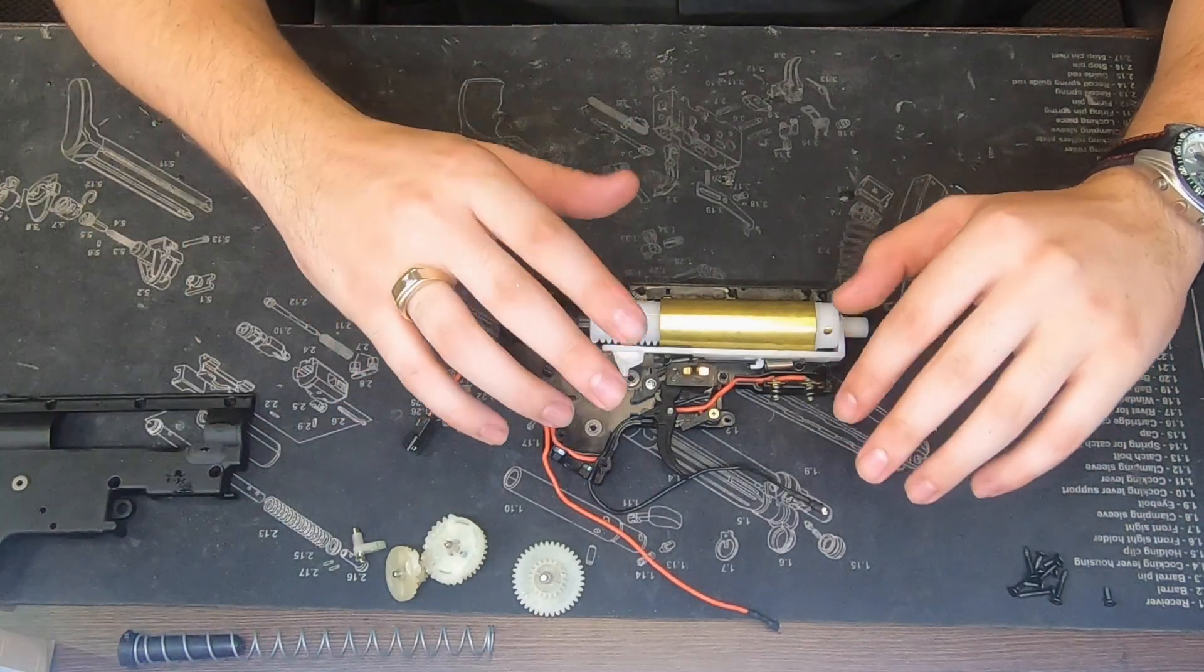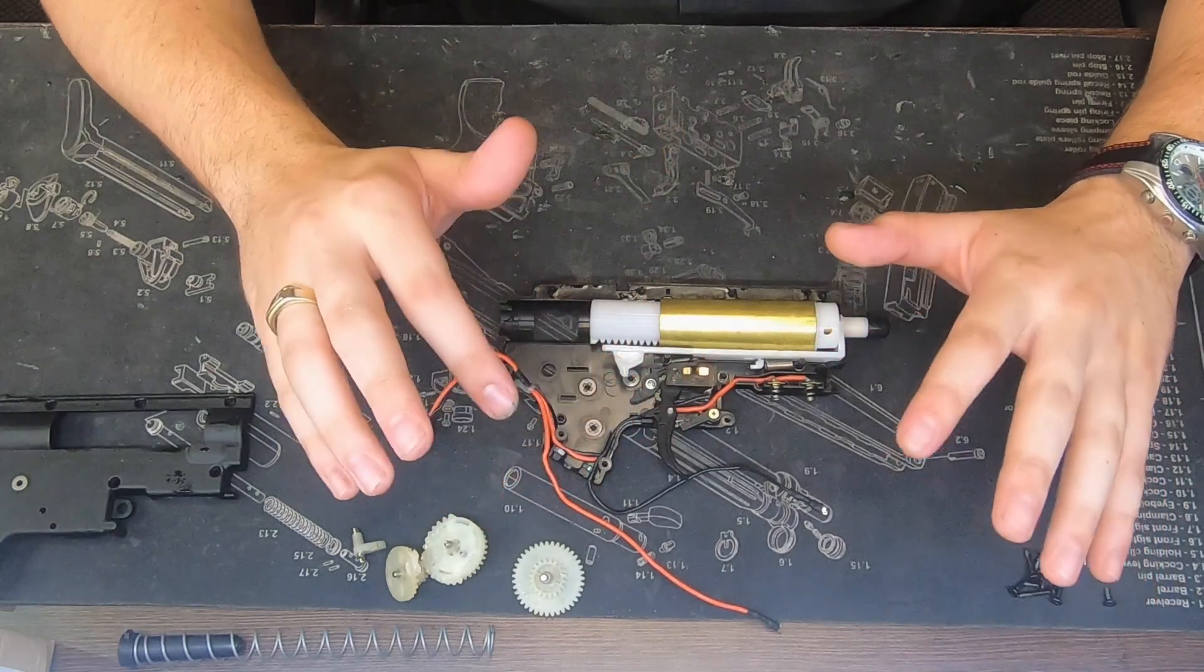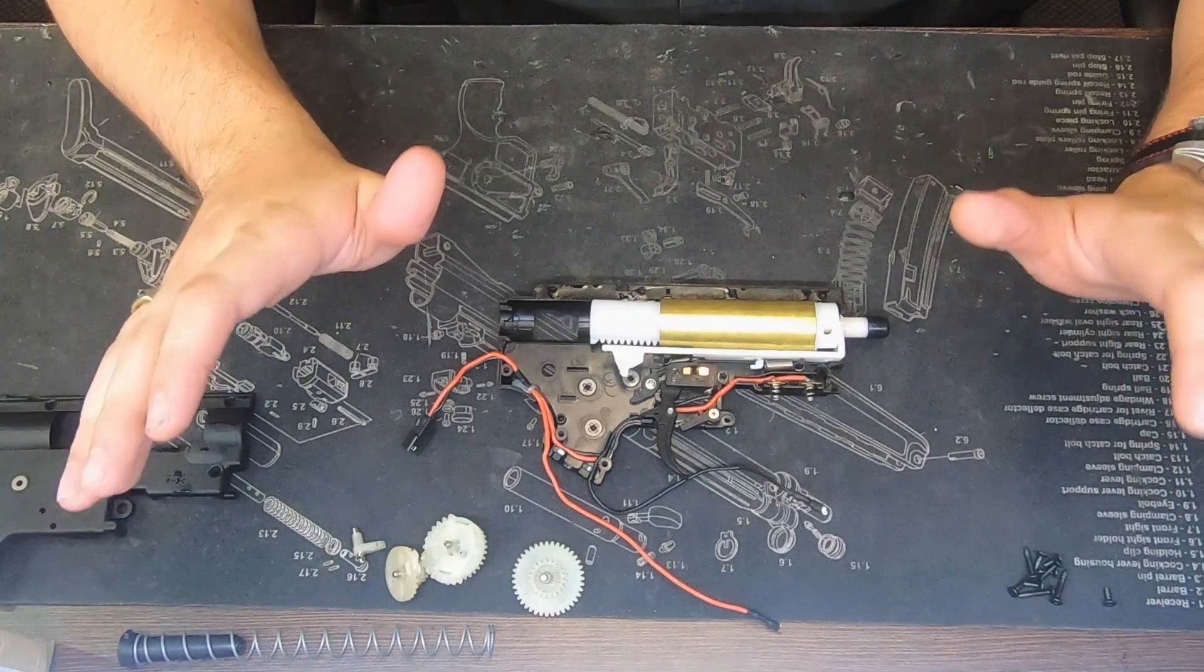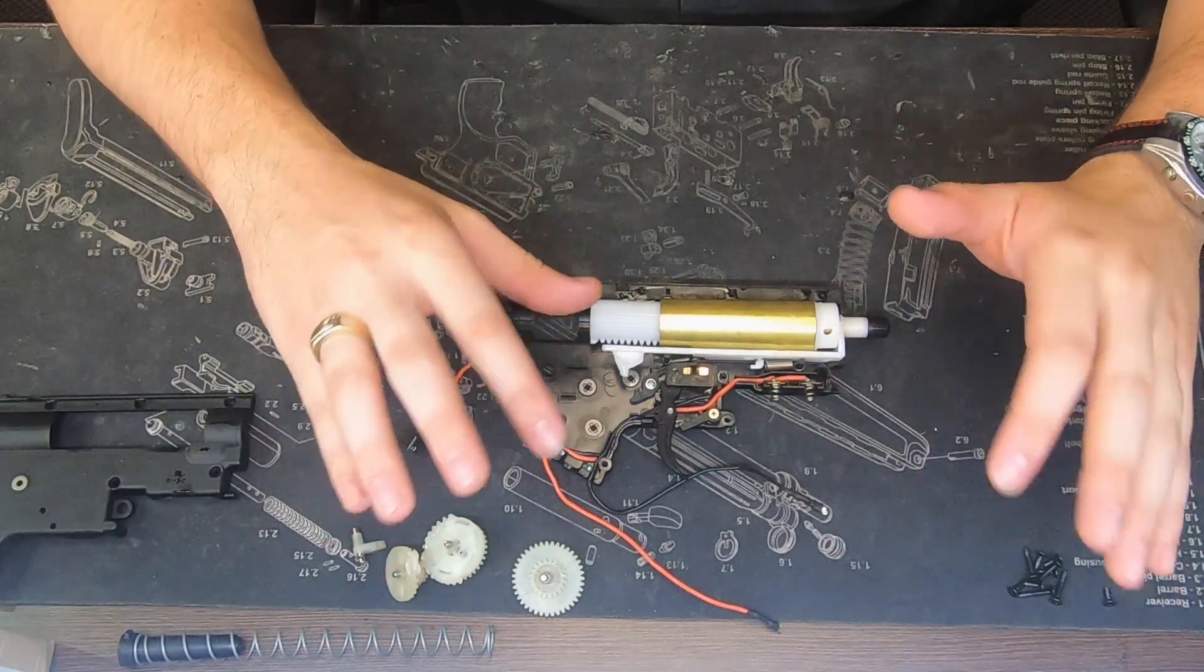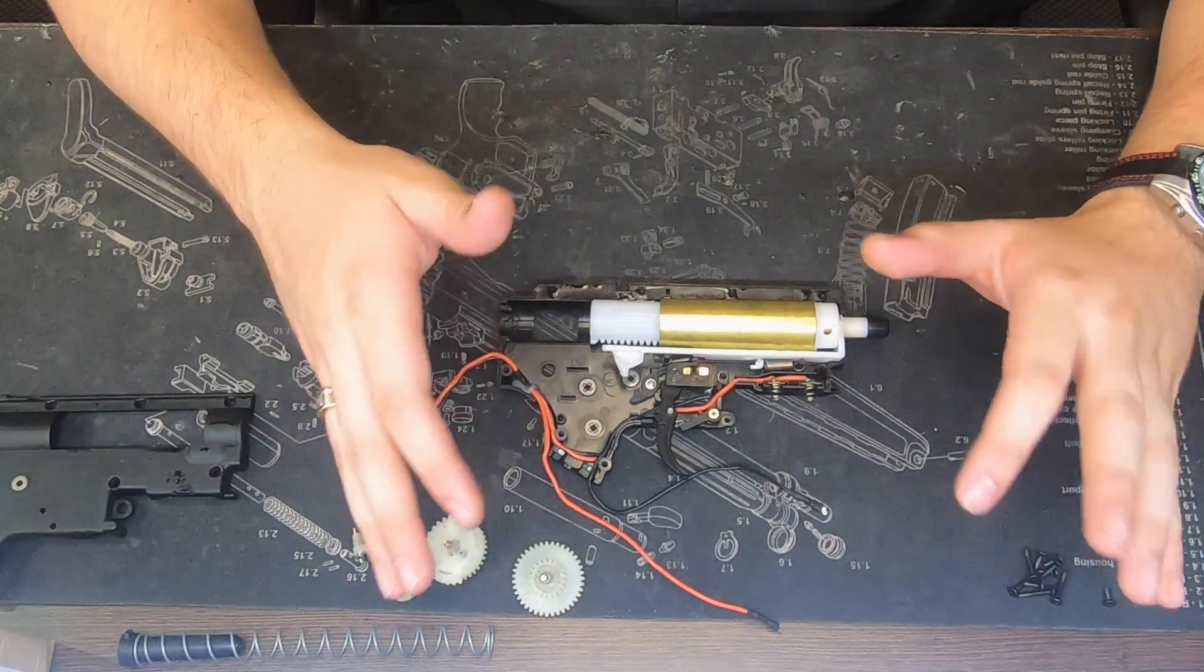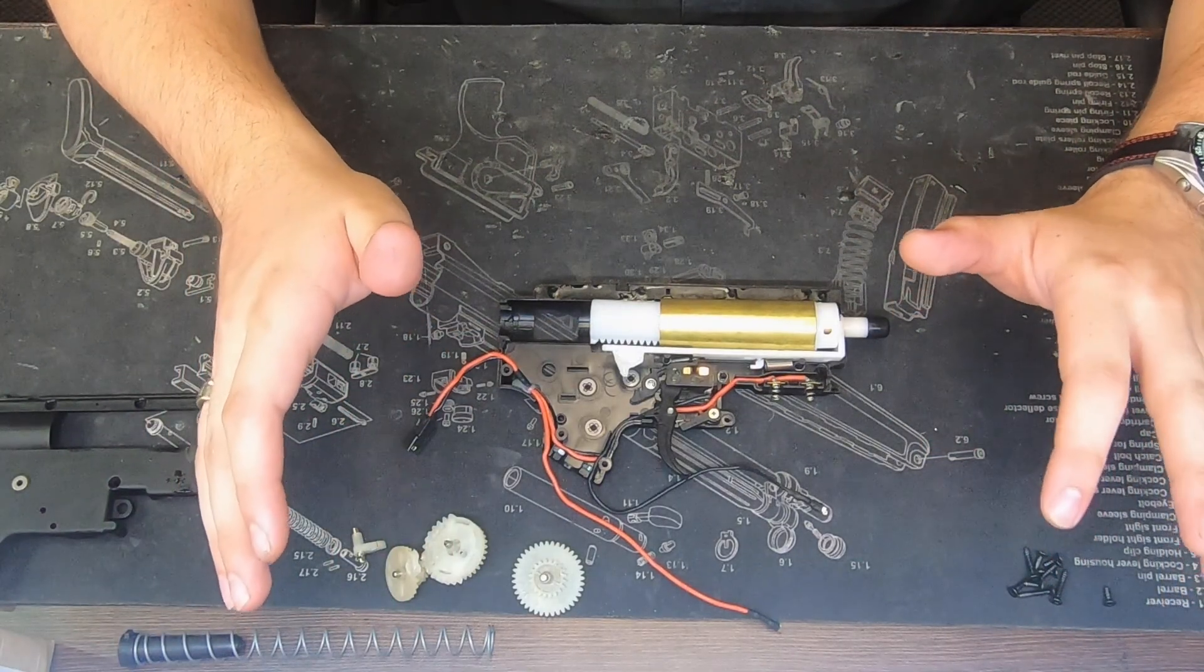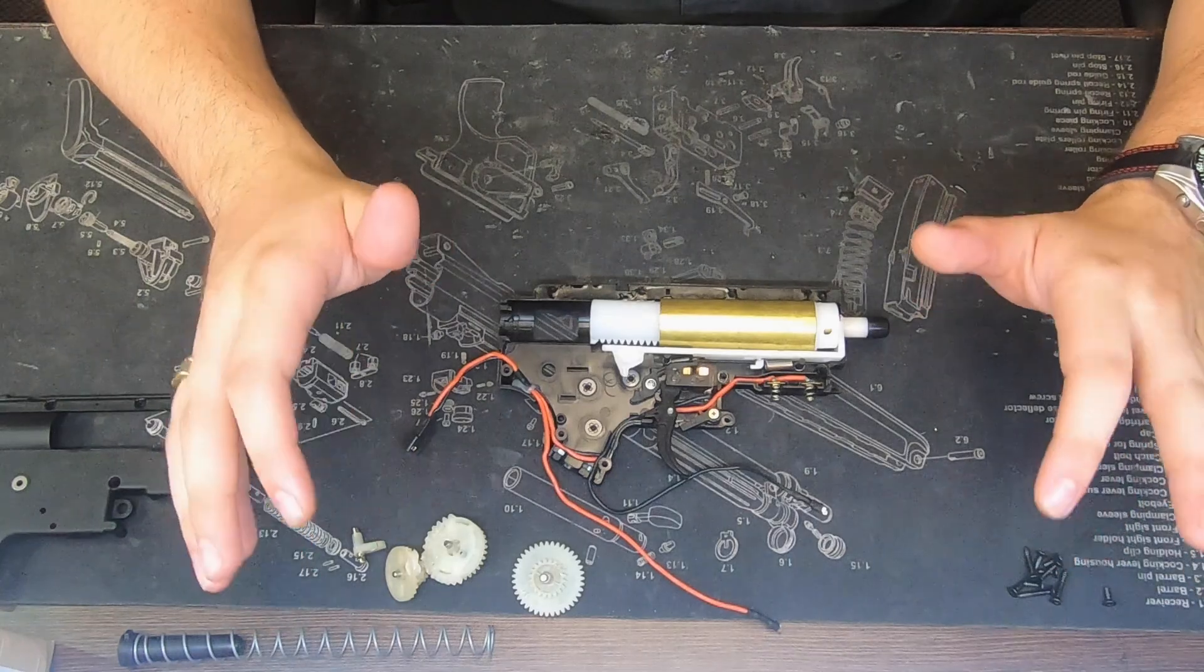Or you can do the spring and the o-ring, and put a metal barrel in, instead of a plastic one. And that will also bring up the FPS quite a lot. So, out of the box, these do like 230 to 240. With those basic upgrades, you're probably looking at like 260, 270.